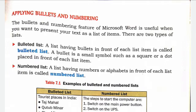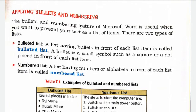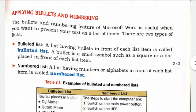The bullets and numbering feature of Microsoft Word is useful when you want to present your text as a list of items. This feature is very useful when we have a list of items or objects. There are two types of lists: one is a bulleted list and the other is a numbered list.